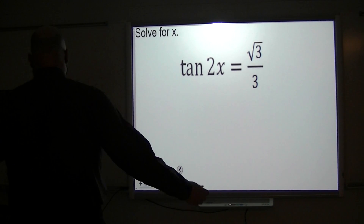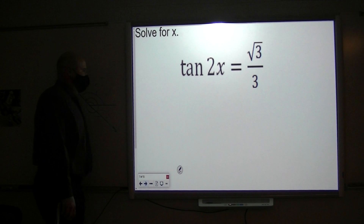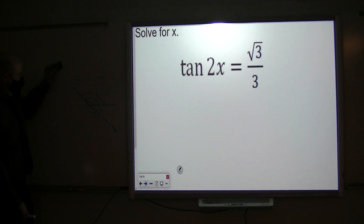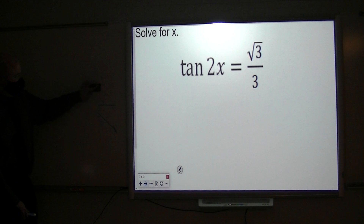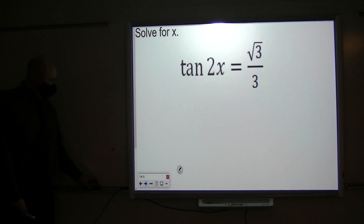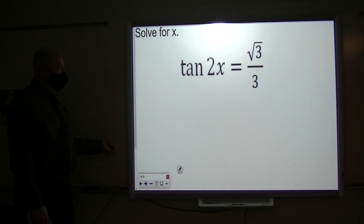Quirk number two, or curveball number two, variation number two here, would be a problem that looks like this. What makes this problem different from all the other problems that we've done so far?